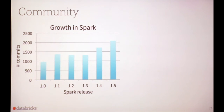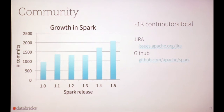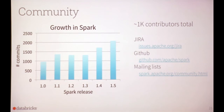The final thing I want to mention about Spark is the community, which has been critical for its development. Looking at Spark releases — which happen every three months — the number of commits is steadily growing, with about 2,000 commits in the last release, 1.5. If you sum up individual contributors, it's getting close to 1,000. All this development is happening freely available online — discussions on JIRA, code additions via GitHub pull requests. There are also both user and dev mailing lists, and a lot of meetups listed at Spark Hub.